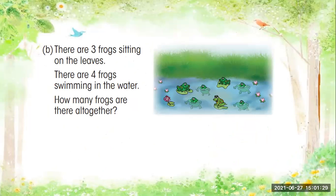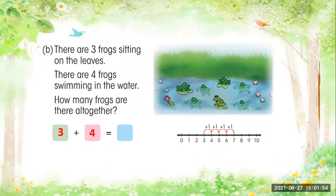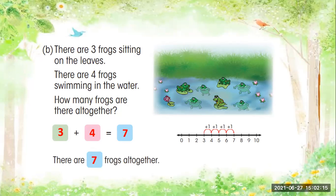Now letter B. There are three frogs sitting on the leaves and there are four frogs swimming in the water. How many frogs are there all together? So three plus four is equals to — we will use a number line. We will start from number three and count forward four times: three plus one is four, four plus one is five, five plus one is six, six plus one is seven. So three plus four is equal to seven. Therefore, there are seven frogs all together.